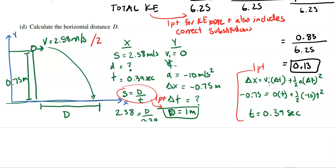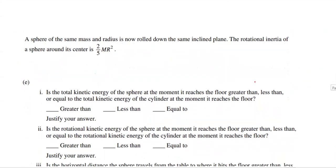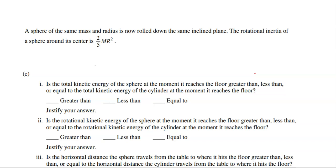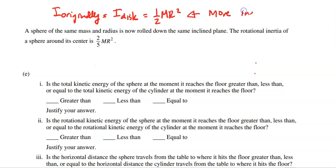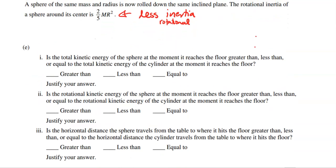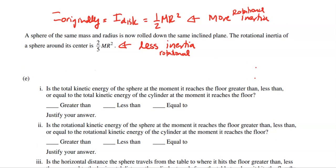For part E, a sphere of the same mass and radius is used. The rotational inertia of the sphere is (2/5)mr², while the solid cylinder had (1/2)mr². The cylinder has more rotational inertia than the sphere. For each sub-question, you get one point for the correct answer and one point for correct justification.